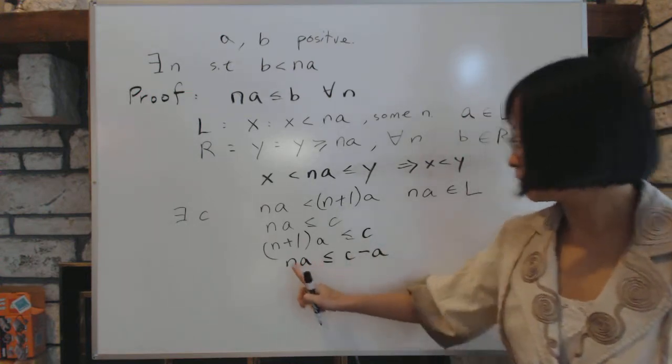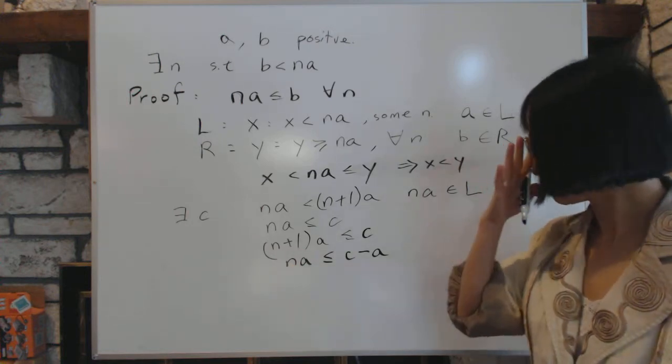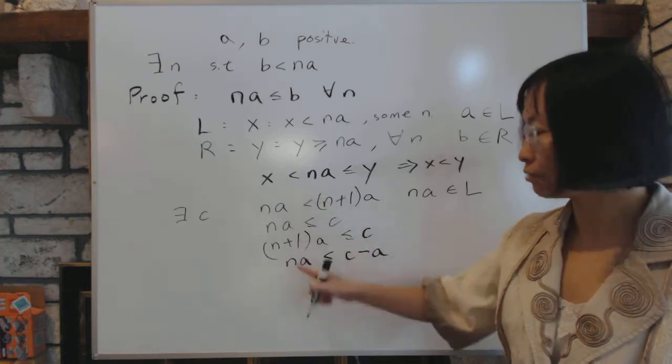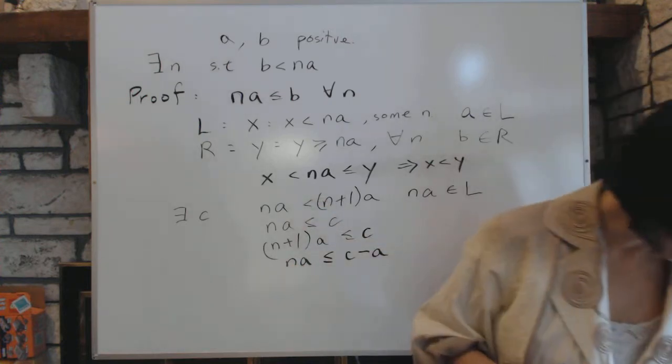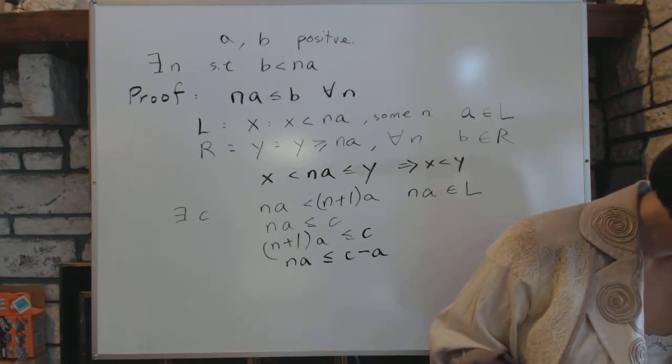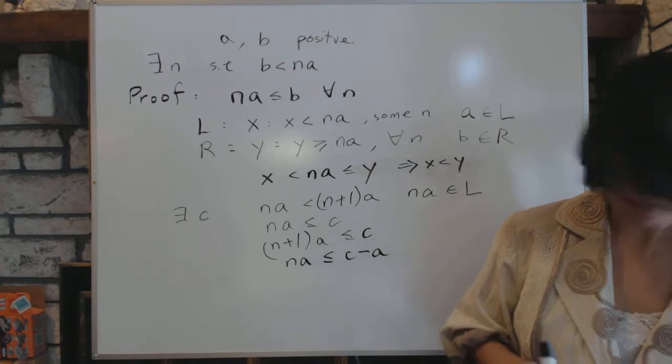That's fine. But get this. This N is just a random N. This is all Ns. Any N will satisfy this condition. Now, if that's the case, we conclude that C minus A is in R.